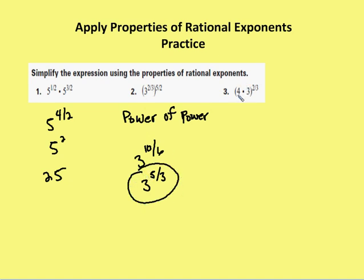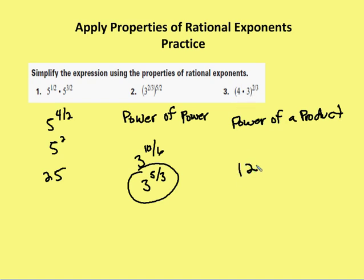Next, I have 4 times 3 to the 2/3. This is going to use the power of a product property. In this case, I'm going to multiply these two values together to give me 12, so I have 12 to the 2/3.